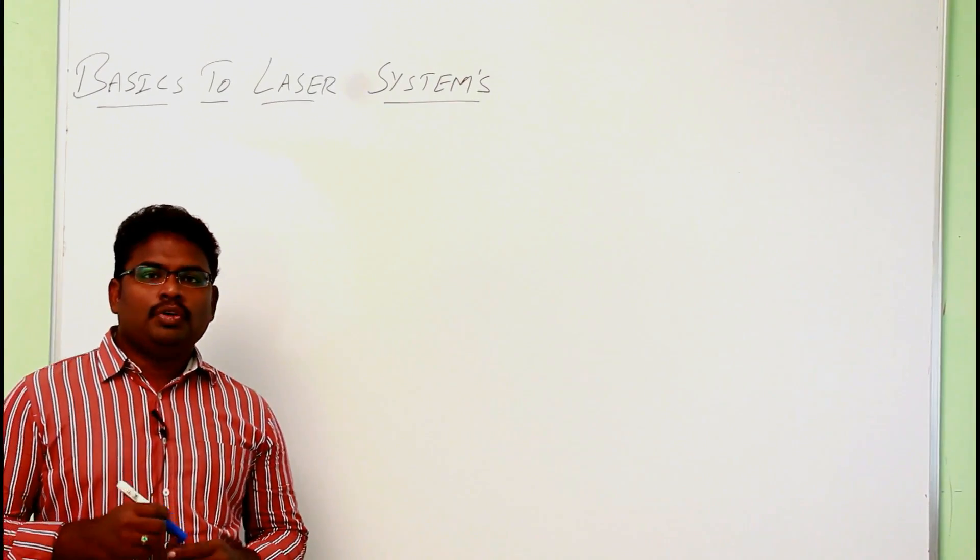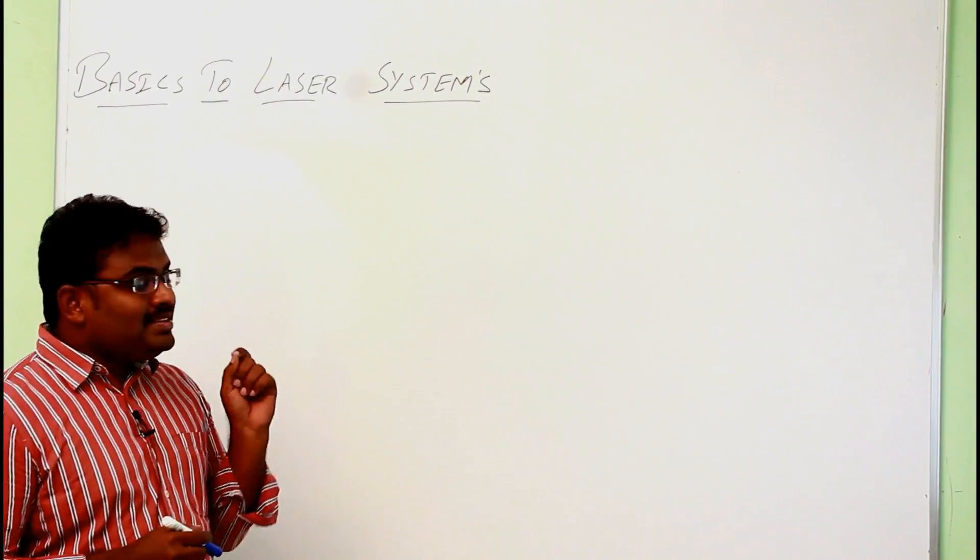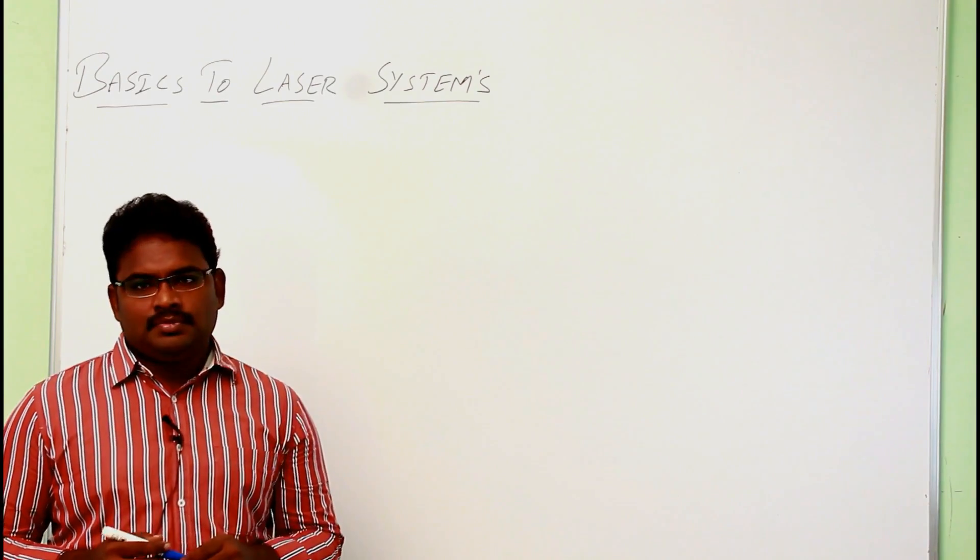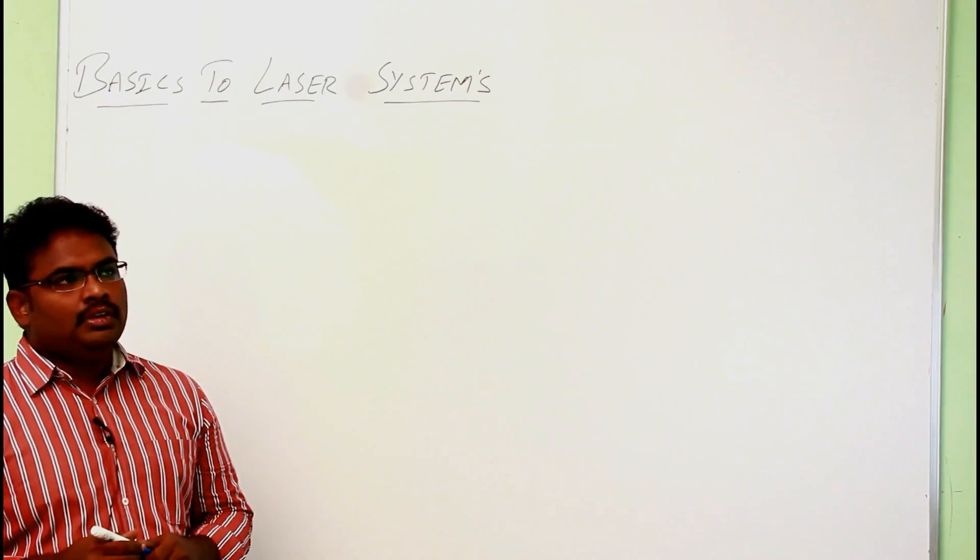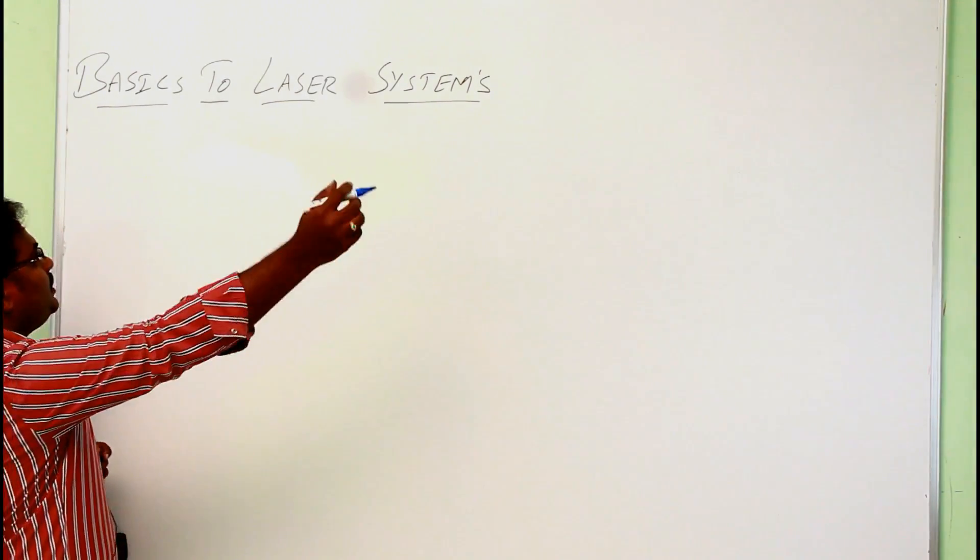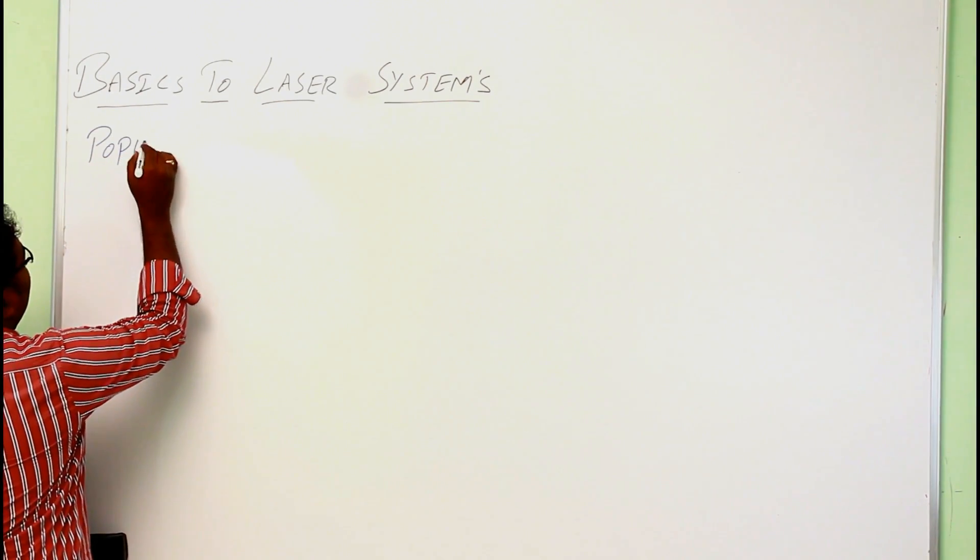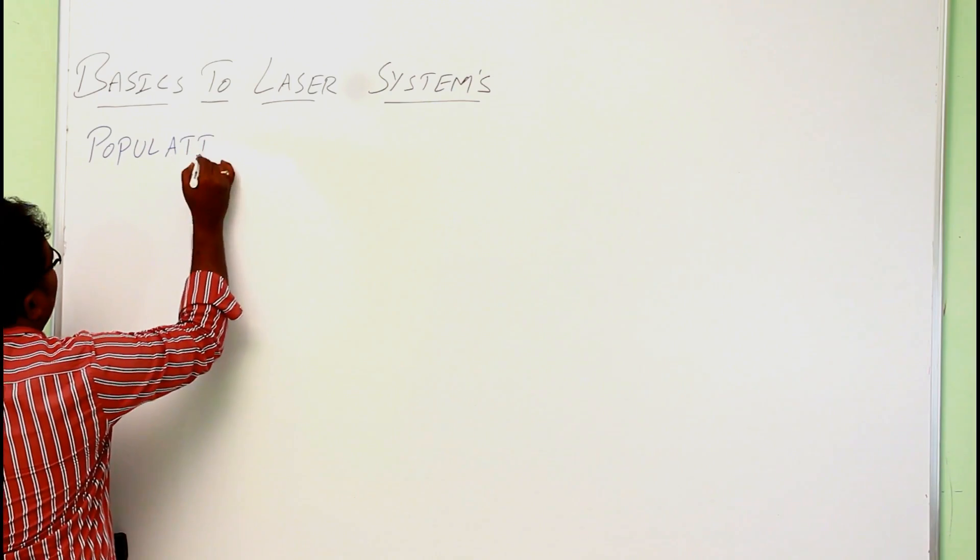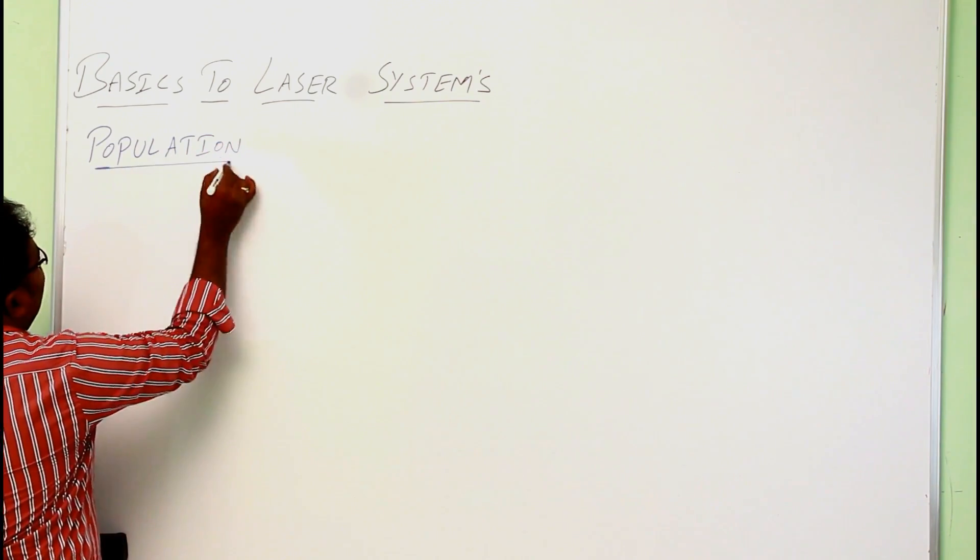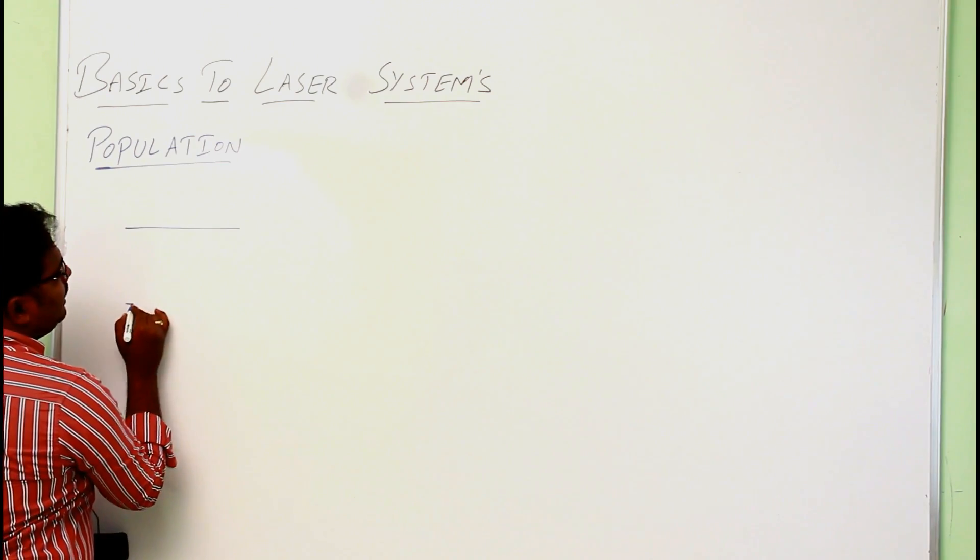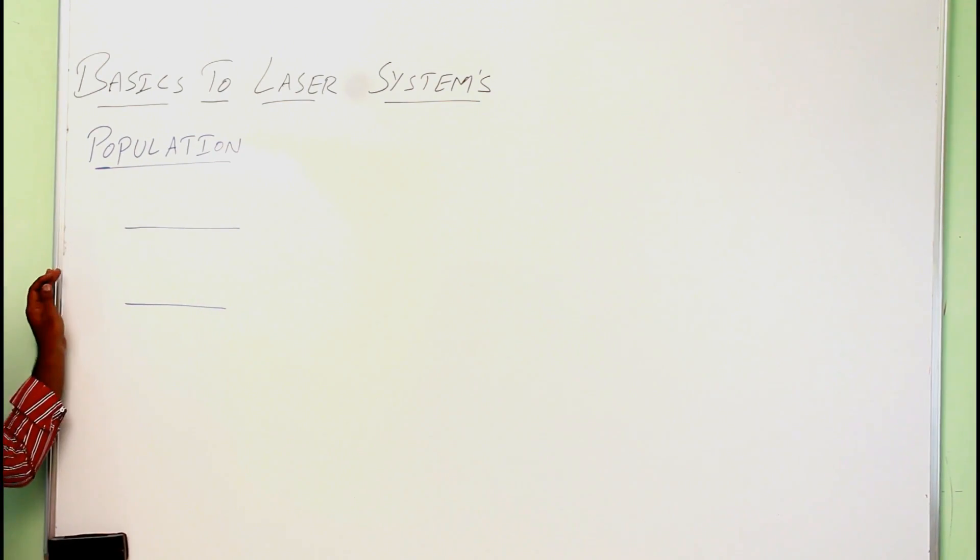In this class we are going to see the basic requirements of laser systems. So it's a basics class. The first basic is population. Population means the number of available atoms in an energy level is called the population of that energy level.